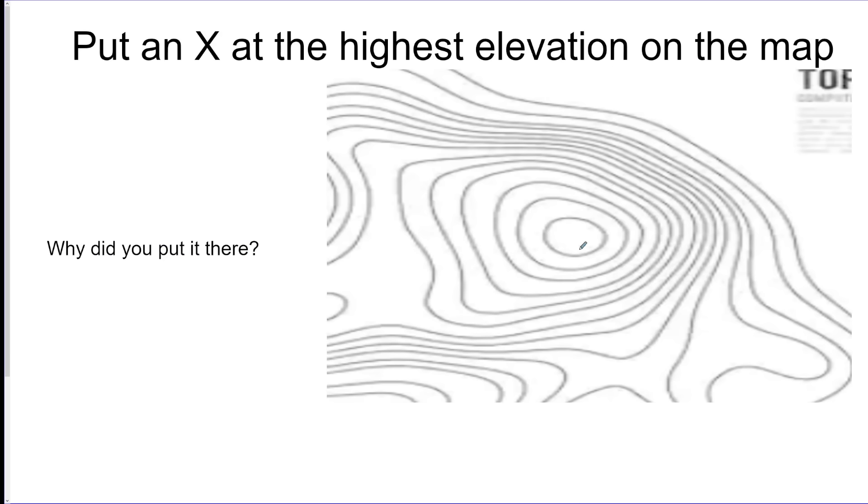So the smaller the circle on the contour map, the higher the spot. So the highest elevation on this map would be somewhere in here. Remember, where the lines are close together, that's a steep area, and where they're far away, that's a gradual gentle area. Steep means like a hill, like this, like a cliff, and gradual means like, you know, like not that big of a cliff. It's like a gradual change.